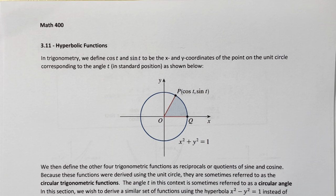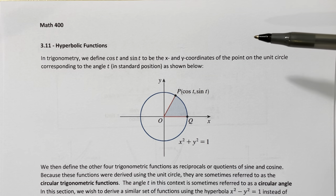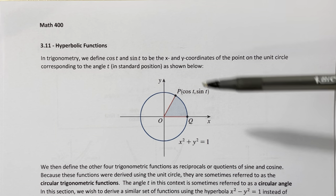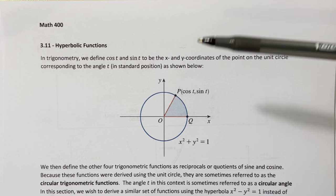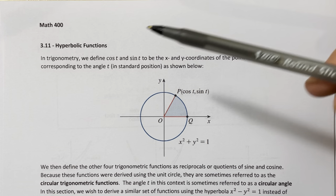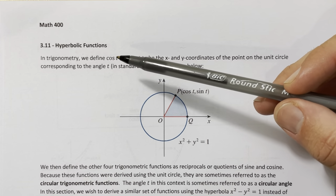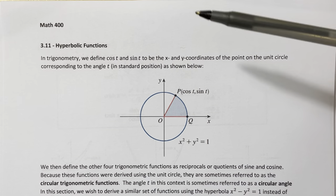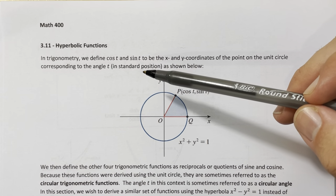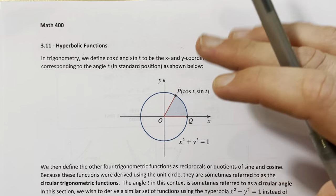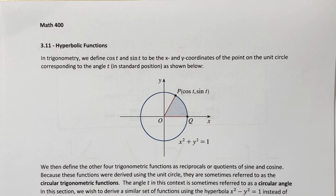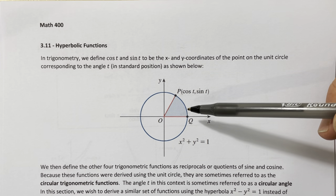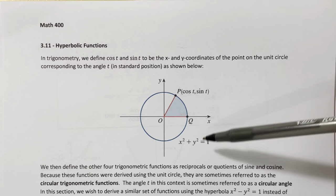To introduce these functions, we're going to revisit the trigonometric functions. There are six of them, but we'll start with the two you always start with — cosine and sine. From trigonometry, once you break out of the right triangle definition, we define sine and cosine by relating them to points on a unit circle.